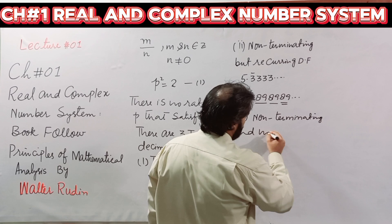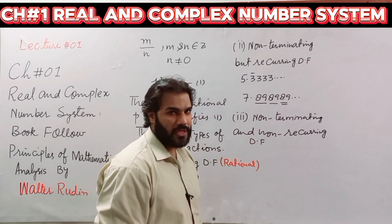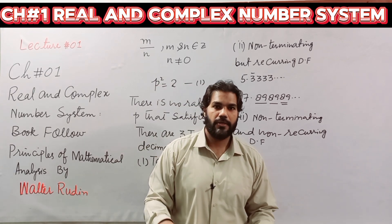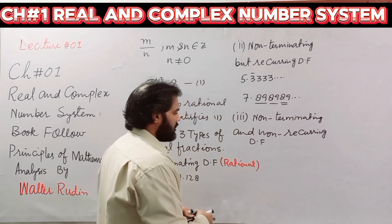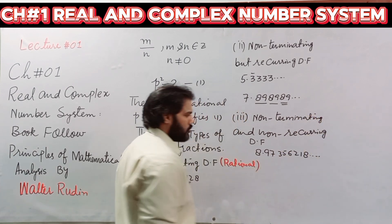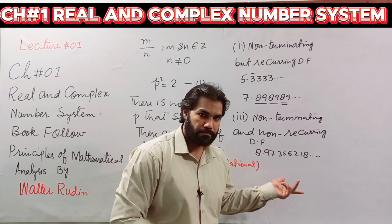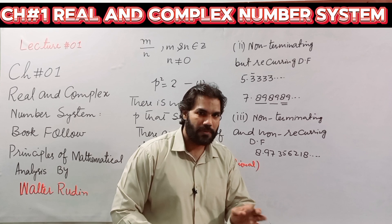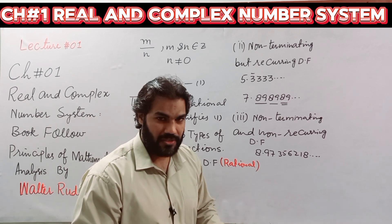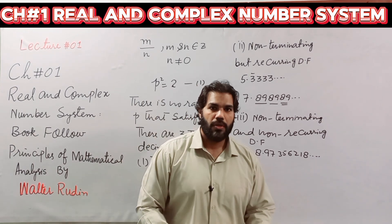The third type is non-terminating non-recurring decimal fraction, where there is no pattern to predict what the next digits will be. This is a non-terminating non-recurring decimal fraction and this type is always an irrational number. So the first two types of decimal fractions are rational numbers, and the third type represents irrational numbers, because this fraction cannot be converted into p over q form.